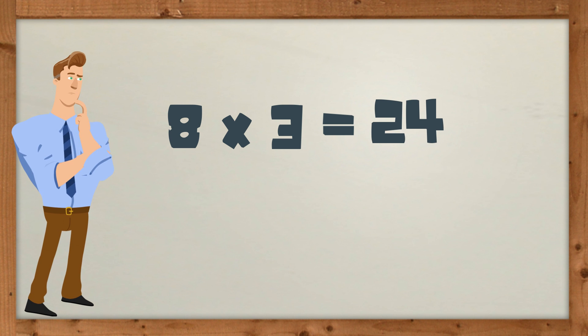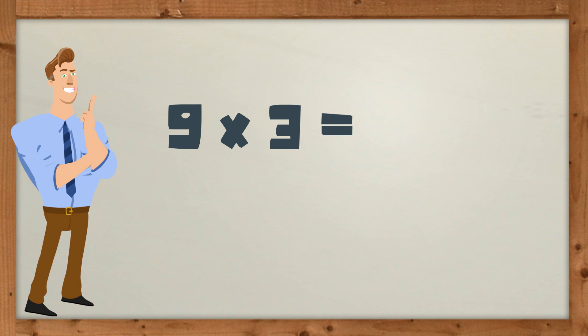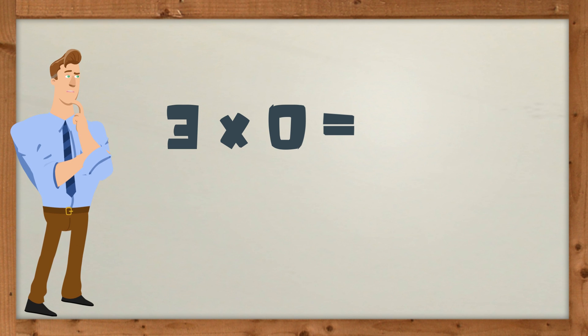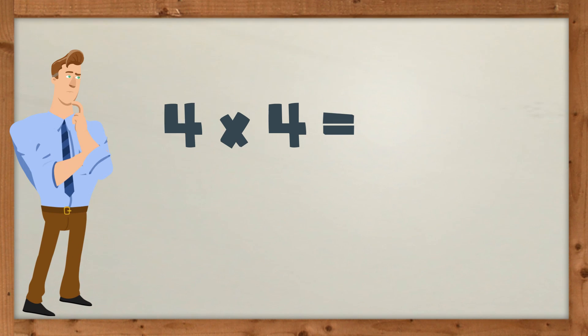8 times 3 equals 24. 9 times 3 equals 27. 3 times 0 equals 0.